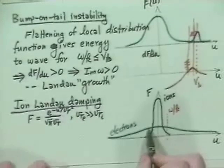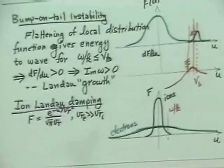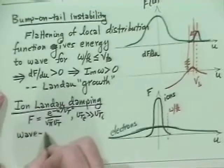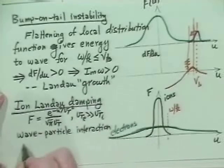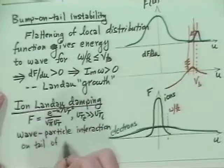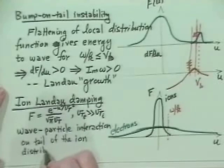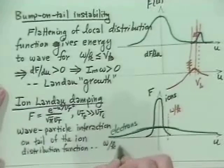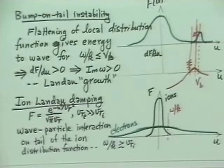It would also produce a little bit of electron Landau damping, but the distribution function of the electrons is sufficiently flat that their gradient isn't so large and maybe we don't get too much of an effect. This is wave-particle interaction on the tail of the ion distribution, where omega over k is somewhat greater than the ion thermal speed but much smaller than the electron thermal speed.